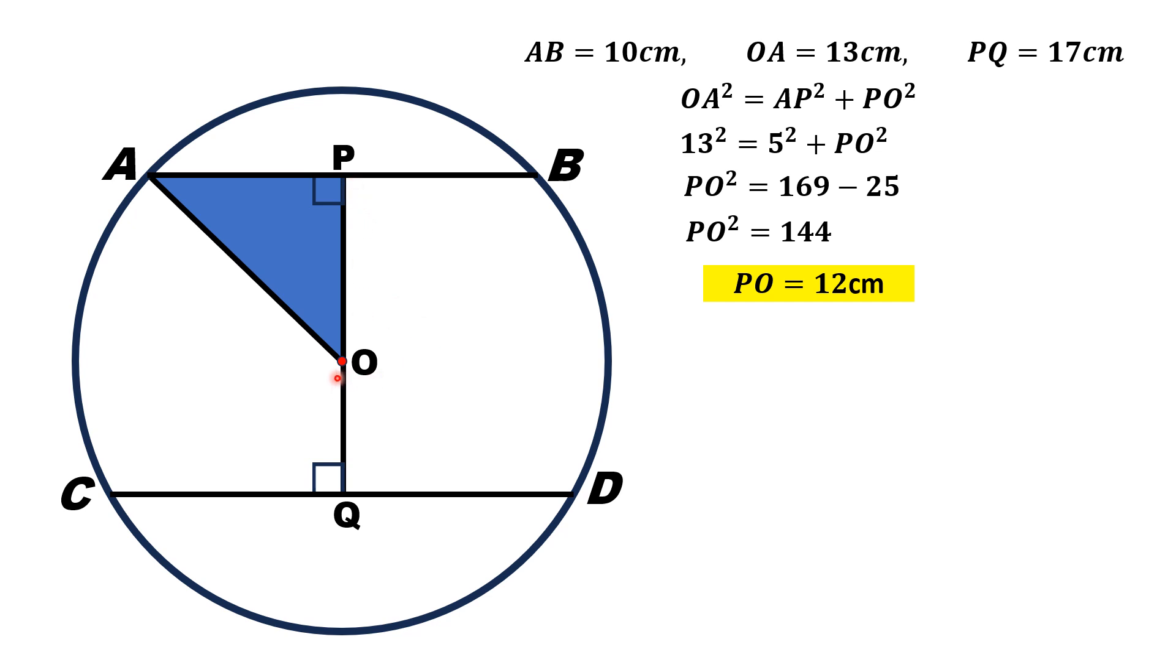Now, we draw the radial line OC and focus on triangle OQC. Here, since PQ length is 17 cm and PO is 12, so OQ is 5 cm and OC is the radius of the circle, that is 13 cm.